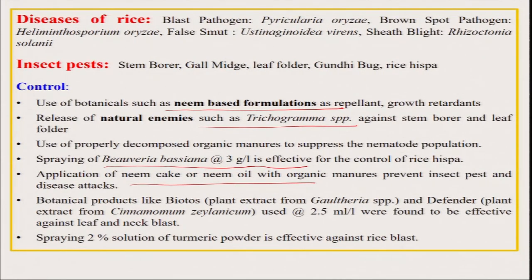Botanical products like Biotest and Defender are produced, and a simple 2 percent solution of turmeric powder is also very effective against rice blast — turmeric has a defense mechanism, as seen in its use during the COVID situation where turmeric powder with milk was advised. In our organic farming, fields should be very clean. We have to follow different types of crop rotation and crop diversification, and when growing rice we should go for newer innovative methods like SRI and ICM, controlling pests and diseases organically with local and approved organic formulations.